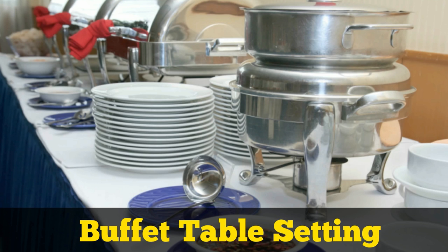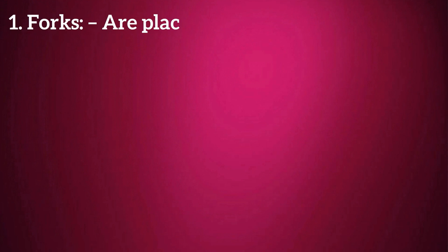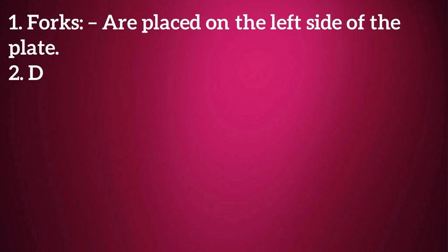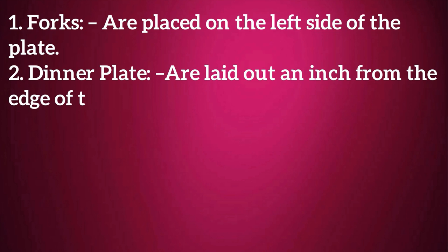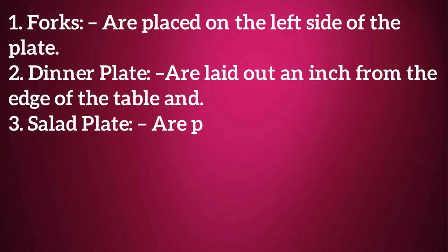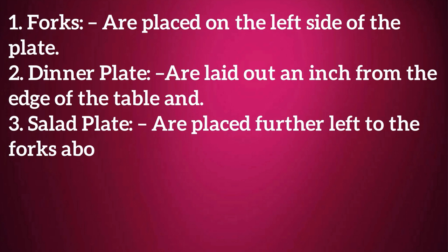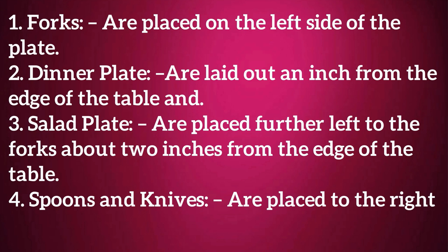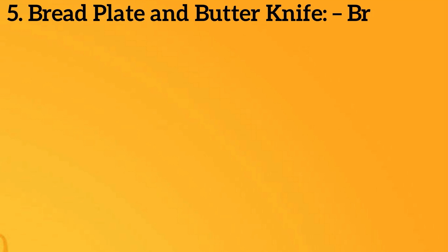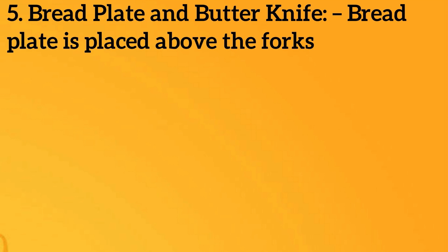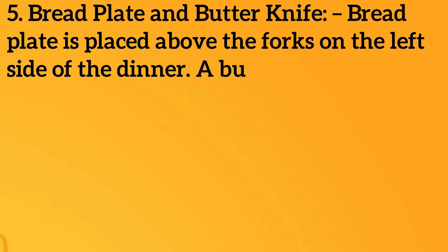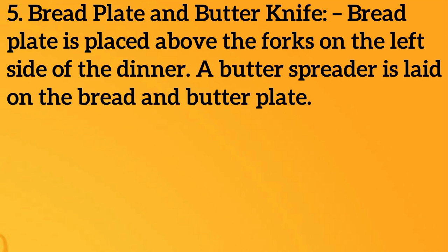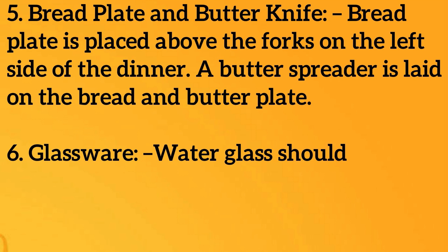Buffet table setting: forks are placed on the left side of the plate. Dinner plates are placed for the main course about an inch from the edge of the table, and salad plates are placed further left of the forks, about two inches from the edge of the table. Spoons and knives are placed to the right of the dinner plate, with the knife next to the plate. The bread plate is placed above the forks on the left side of the dinner setting.